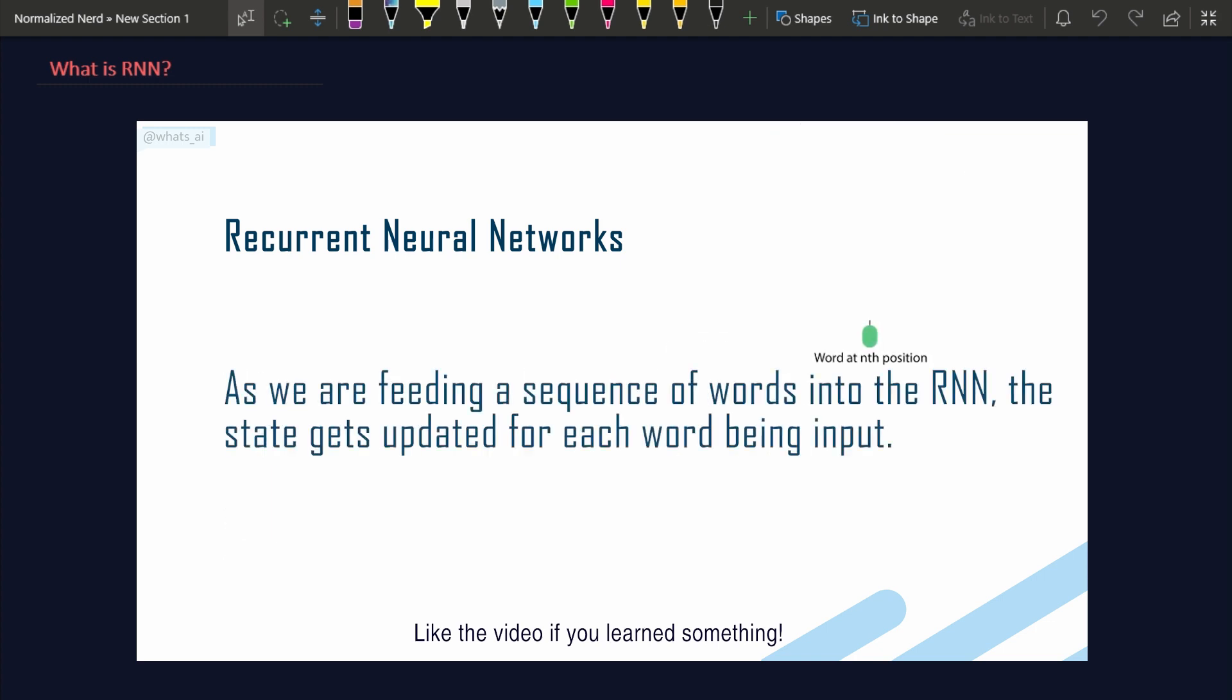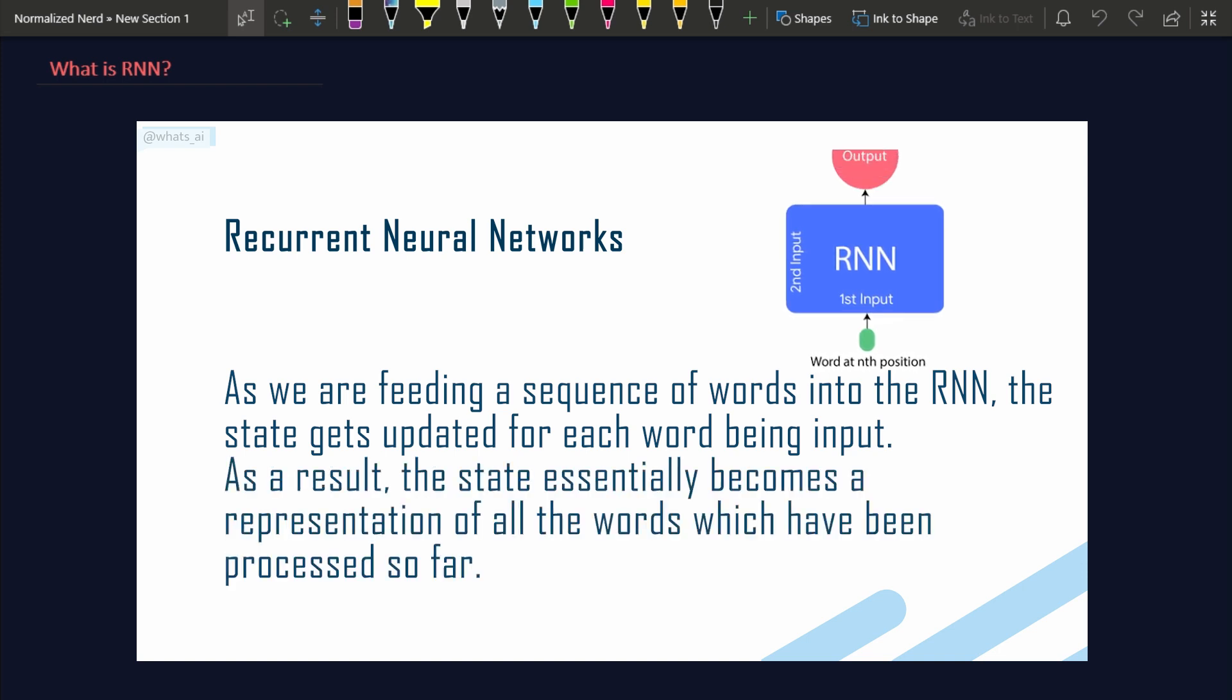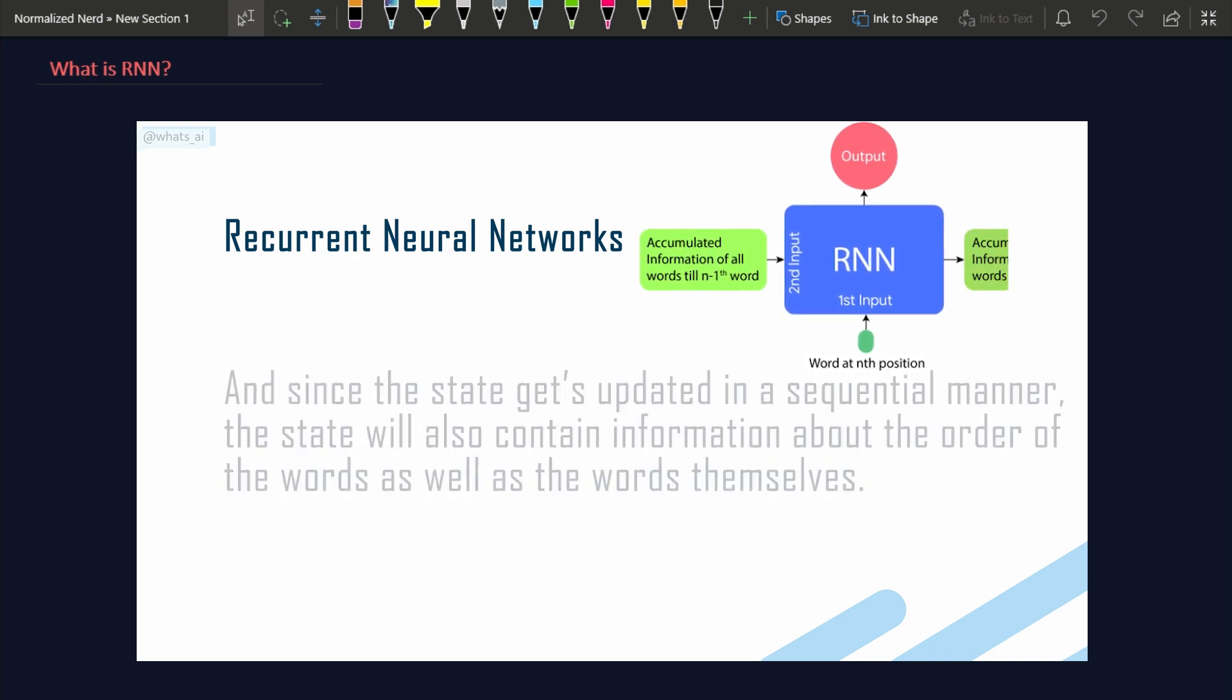As we are feeding a sequence of words into the RNN, the state gets updated for each word being input. As a result, the state essentially becomes a representation of all the words which have been processed so far. And since the state gets updated in a sequential manner, the state will also contain information about the order of the words as well as the words themselves.